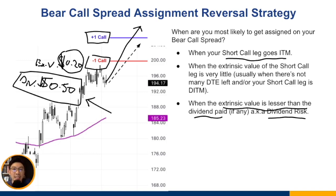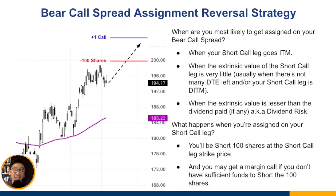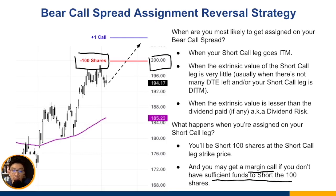So you really have to pay attention to your extrinsic value as well as how much dividend the stock is paying out. If the stock doesn't pay any dividend at all, then you don't have to worry about this. When you're assigned on your short call leg — the opposite of the bull put spread — instead of being long 100 shares, you will be short 100 shares at the strike price of your short call, for example at $200.